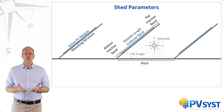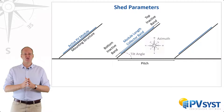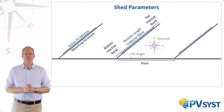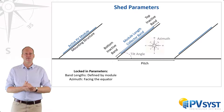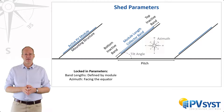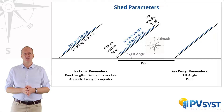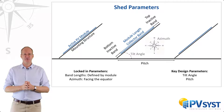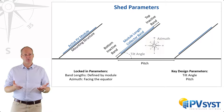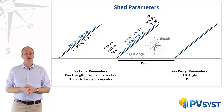Normally, the length of the module will be fixed based on the choice of the module. And in most cases, the azimuth of the system will be set to face the equator for optimal energy yield. In this case, the key parameters we need to set are thus the tilt angle and the pitch. There are many considerations for deciding the appropriate tilt angle and pitch, which include generation efficiency, ease of access, and cost.